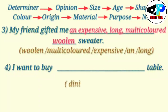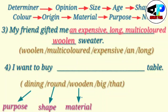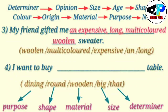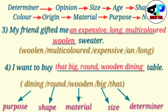Fourth example: 'I want to buy ___ table.' The options are dining, round, wooden, big, and that. Dining is purpose, round is shape, wooden is material, big is size, and 'that' is the determiner. So the order is: determiner (that), size (big), shape (round), material (wooden), purpose (dining). The correct sentence is: 'I want to buy that big round wooden dining table.'